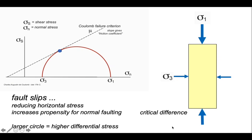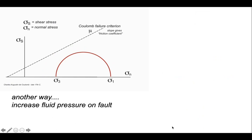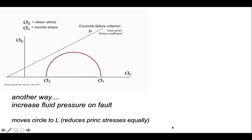Another way to get the circle to intersect the failure envelope is simply to move it sideways, and that is the effect that fluid pressure has on faulting. It moves the whole Mohr circle sideways without changing the differential stress — so the circle remains the same diameter — until it abuts the failure criterion. So fluid pressure increases the probability of faulting.